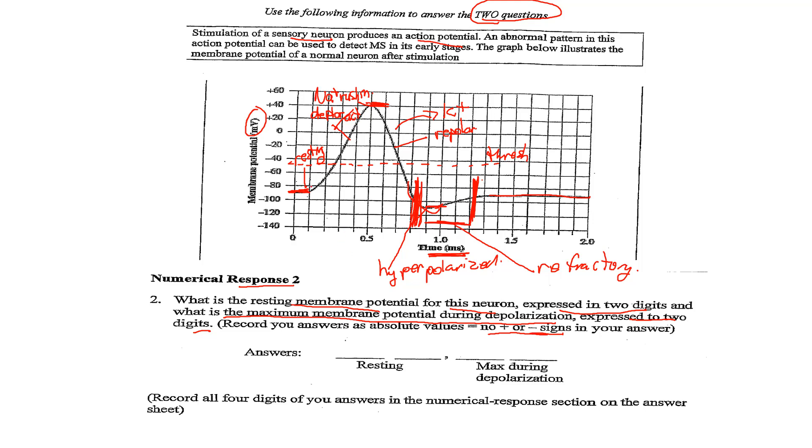So at rest, we already kind of looked at this, at the beginning of this video, we see at rest, it's between minus 80 and minus 100. So between those is 90. Now it is minus, but they're asking you to exclude the negative signs.